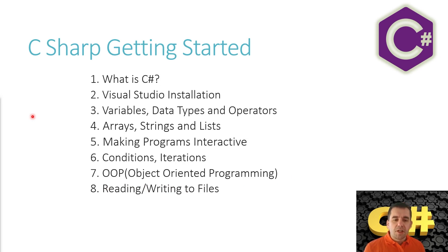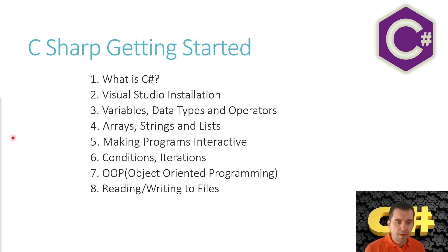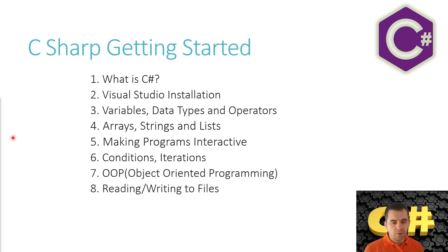What is C#? C# is pronounced 'C Sharp' and is written as C with a hash symbol. It's an object-oriented programming language developed by Microsoft in the early 2000s. It is part of the .NET framework and is meant to make it easy to develop all kinds of applications — console applications, Windows applications, web applications, and even mobile applications.